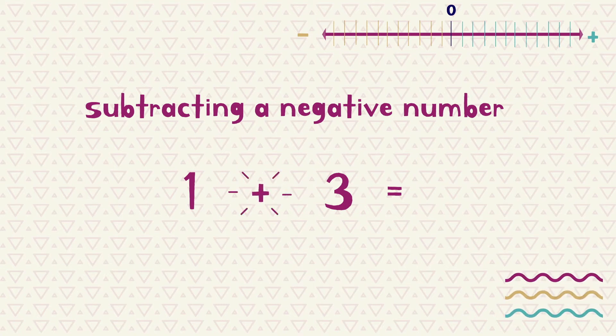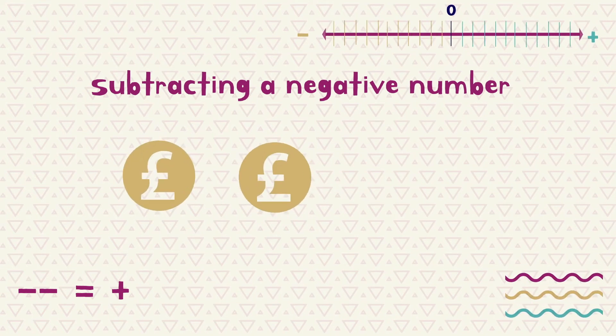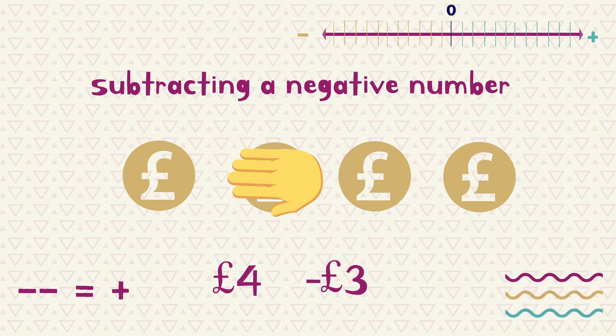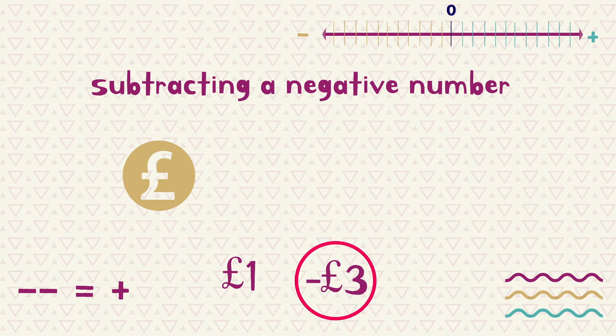This may sound confusing, so let's look again at a real world example. Imagine you have £4 in your bank account. Now the bank accidentally takes away £3. So now you are left with £1. To undo their mistake, or in other words, take away their mistake, they have to add £3 back to your account.